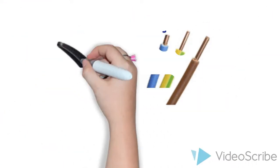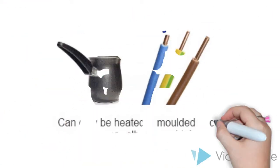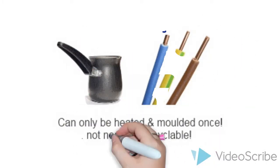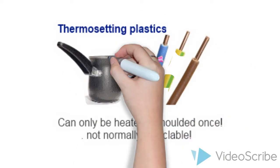But did you know that there are different types of plastics? One type of plastic is called a Thermo Setting Plastic and this can only be heated and molded once and is not usually recyclable.